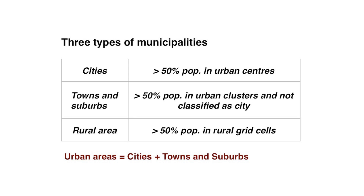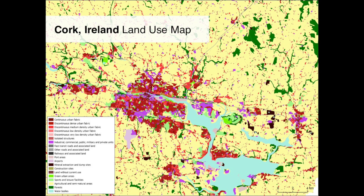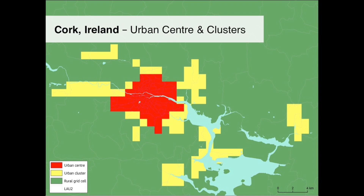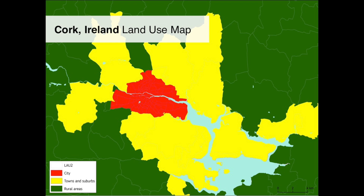Let me give you a concrete example. Here you can see Cork. It's a land use map. In the center you can see the big city, and surrounded you see some suburbs, smaller towns, and rural areas. But you don't know how many people live there, so you need something else. This is what a population grid looks like, and again you can see the big dense center in the middle and some smaller towns on the outskirts. We translate this into our three grid concepts — urban center, urban cluster, and rural grid cells. You can clearly see Cork in the middle in bright red, some suburbs in yellow around it, and some separate towns also in yellow. The rest is rural areas. We translate this into municipalities, and now you have three categories: cities, towns and suburbs, and rural areas.